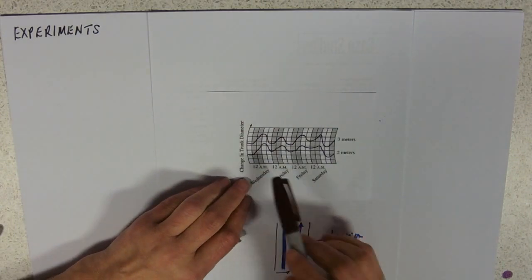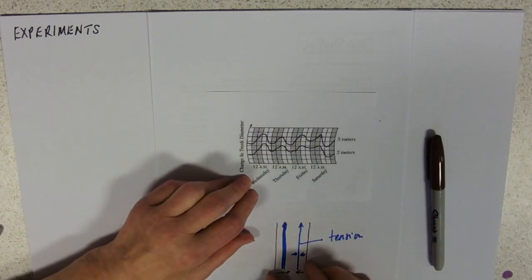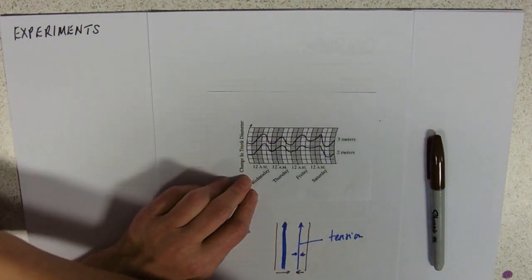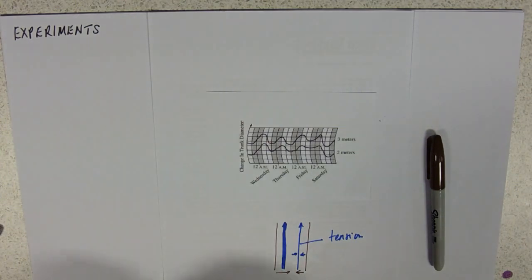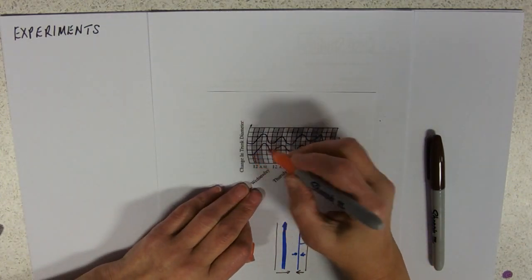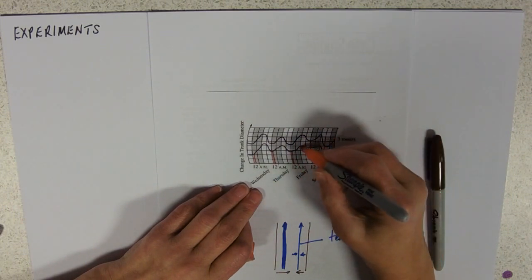And so, here we can see a little graph of change in tree trunk diameter, so we're measuring around it. And you can see that it gets narrower, and it gets wider.